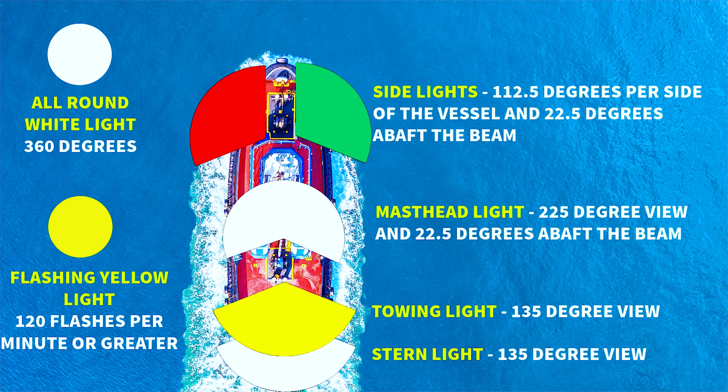Congratulations on making it to the end of the Rule 21 video. As I mentioned at the beginning, it's extremely important that you understand all of these definitions and the arc of visibility for every one of these lights. On the final exam, there will be a lot of questions around arc of visibility. As mentioned in Rule 19, when navigating in restricted visibility or at night, you must understand — when you see the lights of another vessel — whether that vessel is approaching you, you are approaching them, or you're in a crossing situation. This diagram shows all the lights covered in this rule along with their names and arc of visibility. Pause the video and take a screenshot so you can use it when studying for your final exam.